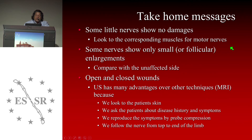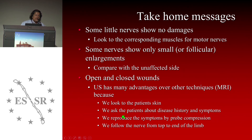Take-home messages: Some small nerves show no damage on ultrasound, so if they are motor nerves, don't forget to look at the corresponding muscles. If they are not motor nerves, it is more complicated. Some nerves show only small or fascicular enlargements — in this case, always compare with the unaffected side. If you have an open wound it is easy; if closed, you must discuss with the patient. This highlights the advantages of ultrasound over MRI: we can carefully examine the patient's skin, ask about history and symptoms, reproduce symptoms with probe compression — a kind of Tinel sign with ultrasound — and follow the nerve from top to end of the limb.